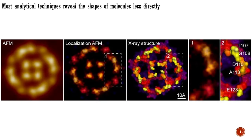Most analytical techniques reveal the shapes of molecules less directly. X-ray diffraction provides information about the arrangement of atoms in space, while other spectroscopic methods, which you will encounter later, reveal details of the composition of molecules or the connectivity of the atoms they contain. Through methods like these, we come to understand the shapes of molecules.